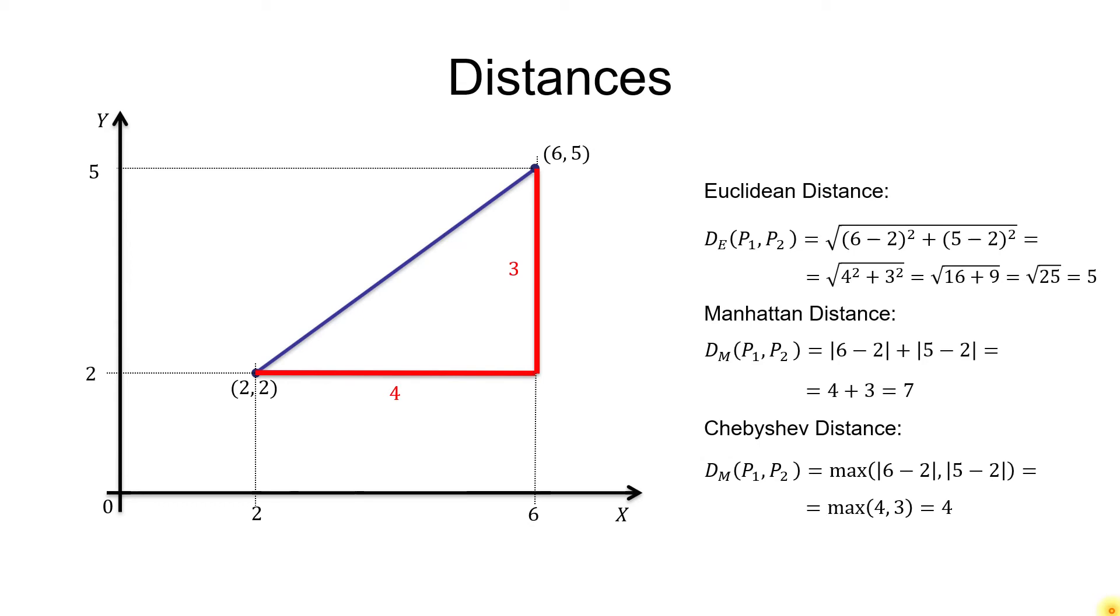A few important remarks. Manhattan distance is always longer or equal to the Euclidean distance. The Chebyshev distance is always shorter or equal to the Euclidean distance. So, Chebyshev is the lower bound and Manhattan is the upper bound for the Euclidean distance. In other words, Euclidean will always be somewhere in between Chebyshev and Manhattan.